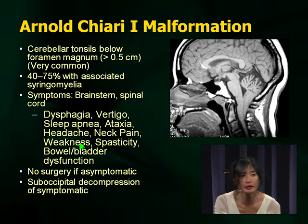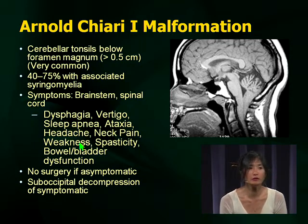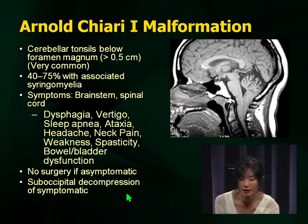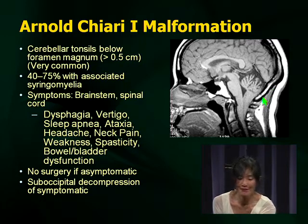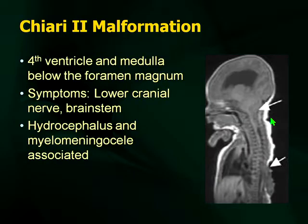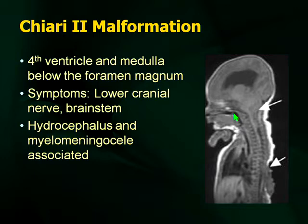The procedure of choice is suboccipital decompression — for a neurosurgeon it's a relatively straightforward procedure if necessary. For Chiari 2, remember that the fourth ventricle and medulla are below the foramen magnum. With Chiari 1, you have tonsillar herniation; with Chiari 2, as the numbers get bigger the herniation gets lower. The fourth ventricle is involved, resulting in hydrocephalus because of obstruction.